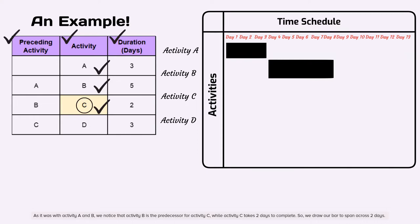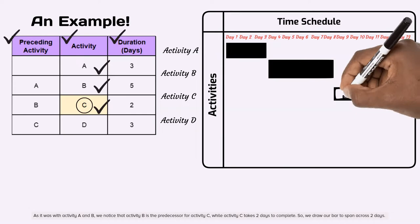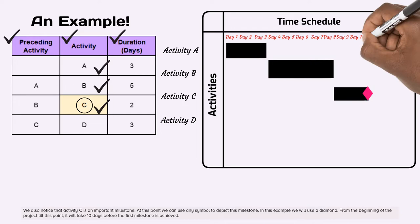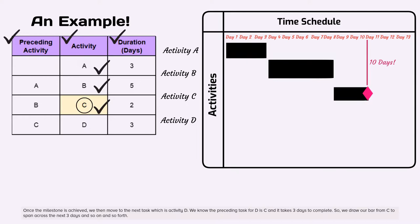As it was with activity A and B, we notice that activity B is the predecessor for activity C, while activity C takes two days to complete. So, we draw our bar to span across two days. Notice that activity C is an important milestone. At this point we can use any symbol to depict this milestone. In this example we will use a diamond. From the beginning of the project till this point, it will take ten days before the first milestone is achieved.